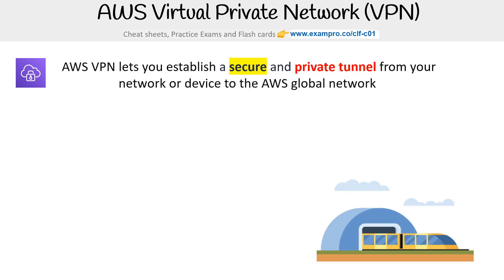When you're using Direct Connect, that will establish a private connection, but it's not using any kind of protocol to secure that data in transit, whereas AWS VPN will be using a secure protocol.